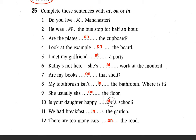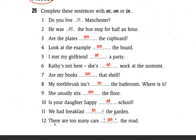Number eleven: We had breakfast in the garden. 'In' is the answer — preposition of place. Number twelve: There are too many cars on the road. 'On' is the answer — preposition of place.